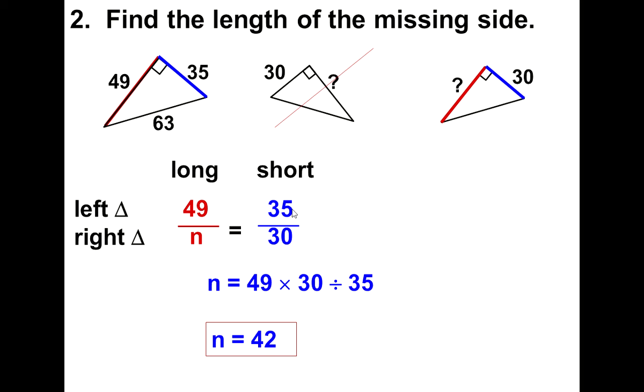Now if you want to use algebra, you would do 35 times n is 49 times 30. Multiply and divide both sides by 35.